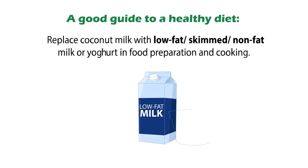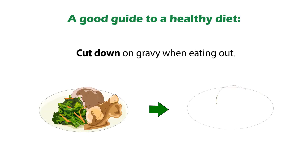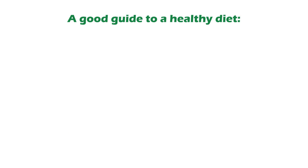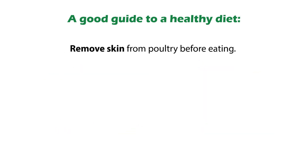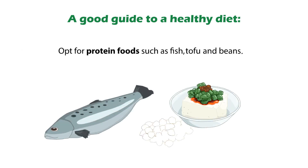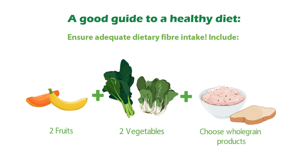A good guide to a healthy diet consists of replacing coconut milk with low fat, skimmed or non-fat milk or yogurt in food preparation and cooking. Cut down on gravy when eating out, as most stalls and restaurants use palm oil. Choose lean meat over fatty meat, remove skin from poultry before eating, and opt for protein foods such as fish, tofu and beans. Ensure adequate dietary fibre by including 2 servings of fruits and 2 servings of vegetables, and choose whole grain products as part of your daily balanced diet.